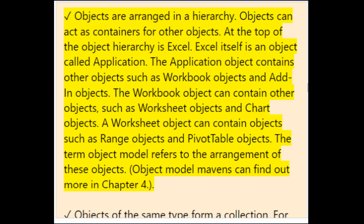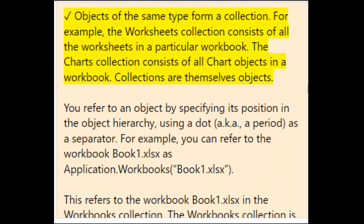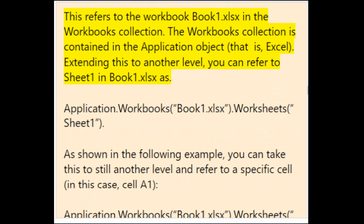The term 'object model' refers to the arrangement of these objects. Objects of the same type form a collection — for example, the Worksheets collection consists of all worksheets in a particular workbook, and the Charts collection consists of all chart objects. You refer to an object by specifying its position in the object hierarchy using a dot as a separator. For example, you can refer to workbook Book1.xlsx as Application.Workbooks("Book1.xlsx").